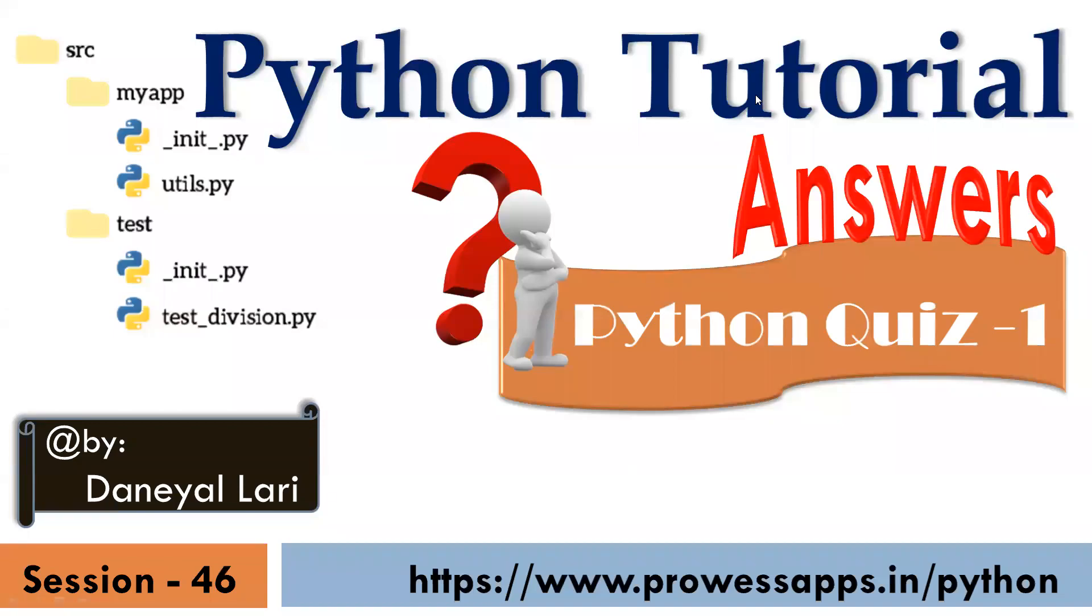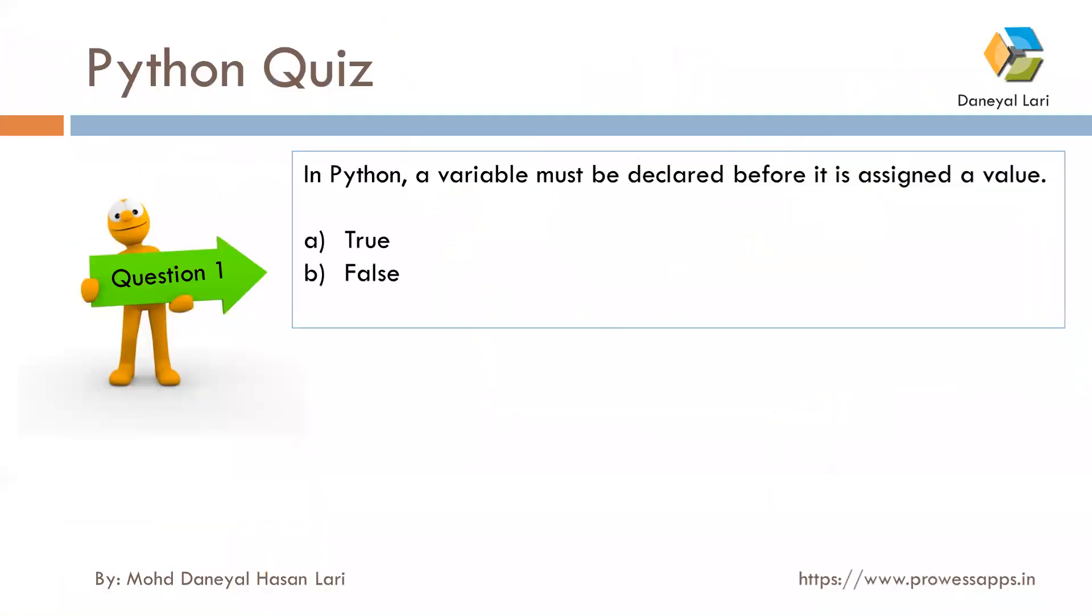Hello, in the previous video I uploaded 10 questions and asked you to submit your answers in the comment box. I got so many answers, so let's see what is the correct answer and you can check your progress. The first question was: in Python, a variable must be declared before it is assigned a value. This statement is not correct, so the correct answer is B, that is false.